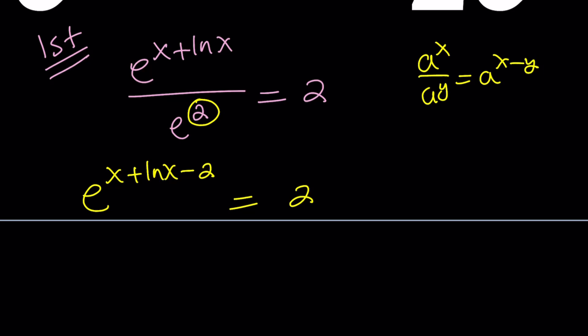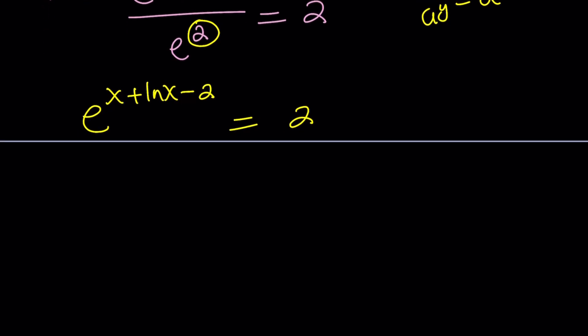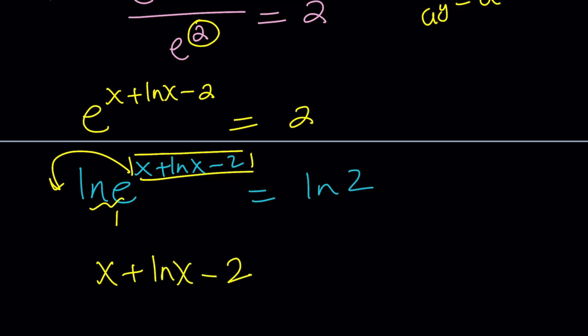And then we can go ahead and natural log both sides. And that's going to give us the following: ln e to the power x plus ln x minus 2 equals ln 2. Now this is a power, so we can bring it down, and ln e is 1. So this becomes x plus ln x minus 2. Some people also say that ln and e cancel each other out, and we end up with the exponent. Same idea.